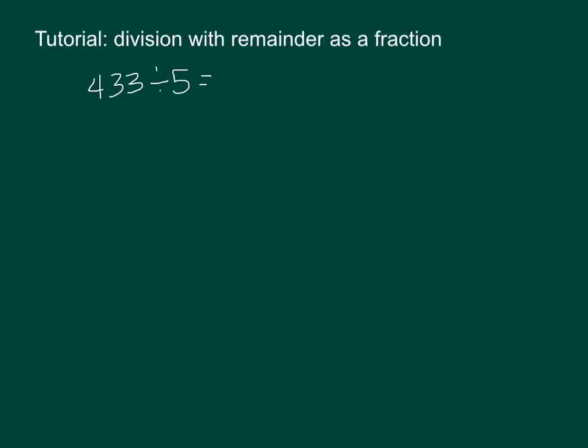So this problem will be a we do and go ahead and copy it down onto your tutorial page. This is going to be 433 divided by 5 and I decided to do the tutorial with a single digit instead of the double digit divisors we did in the lesson. This time I'm going to do single digit because it's my goal that you just understand how to do the remainder as a fraction.